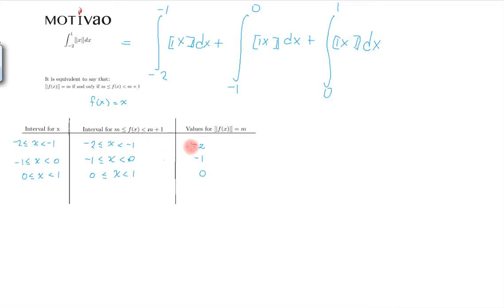Now the reason we have these values is that now we can substitute each value for each interval. And that's what we wanted to do in the first place. That's why we want these values. So this becomes the integral from minus 2 to minus 1 of minus 2 plus minus 1 to 0 of minus 1 plus 0 to 1 of 0.